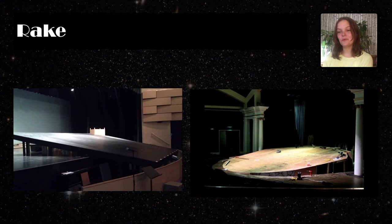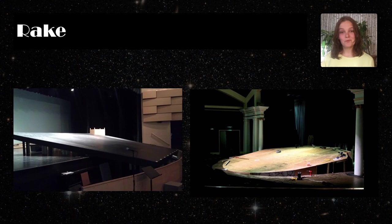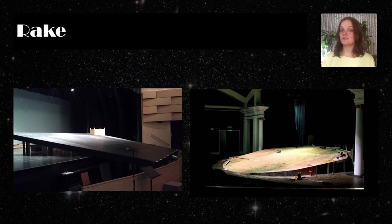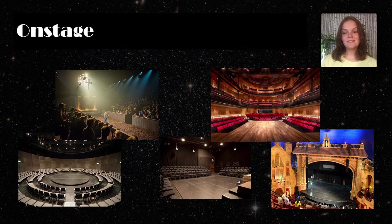A rake, or raked stage, is a theater stage that slopes downward toward the audience. This type of design was common in English theater during the middle ages and early modern eras. It increases audience visibility and sound.